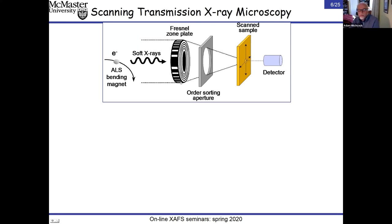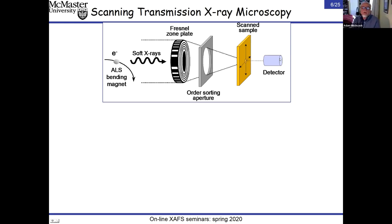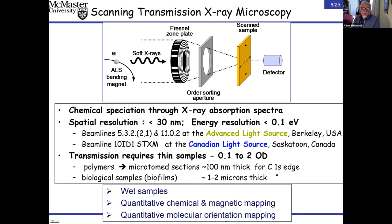Because only 10–15% of the light is focused, a lot goes straight through the zone plate and must be blocked by a combination of an order-sorting aperture and a central stop, meaning there's no direct line of sight through the optical train. The sample is raster-scanned; at each pixel the amount of transmitted light is recorded, giving classic transmission X-ray absorption detection.